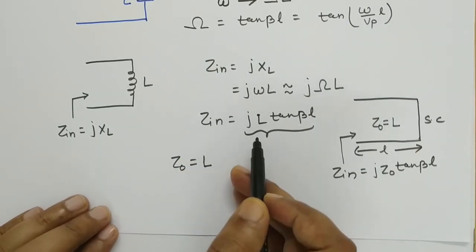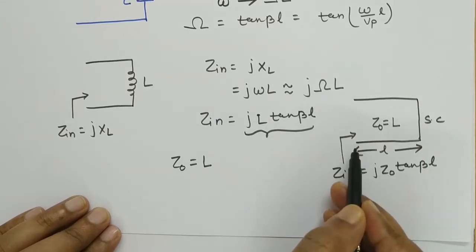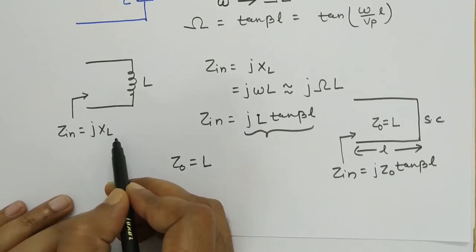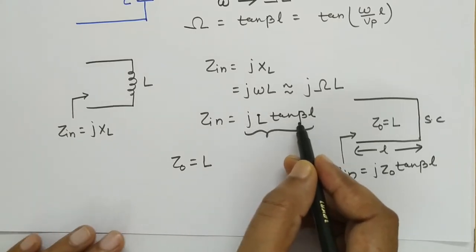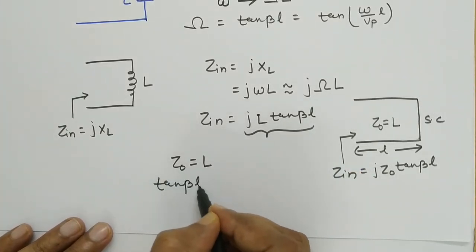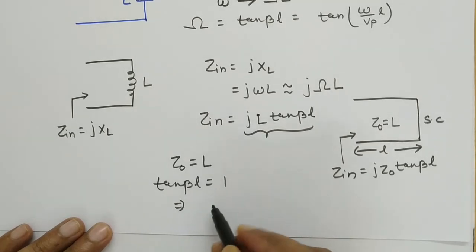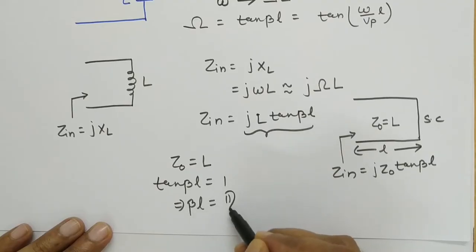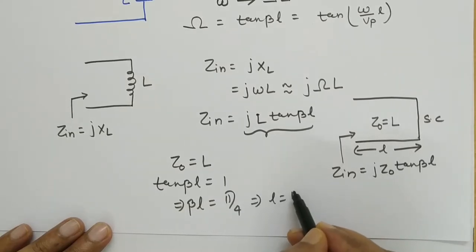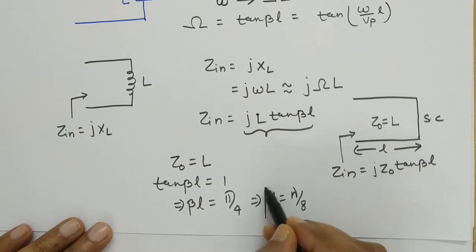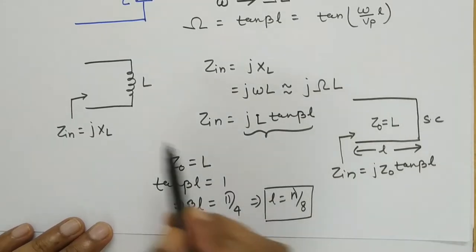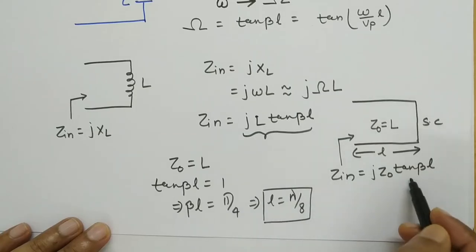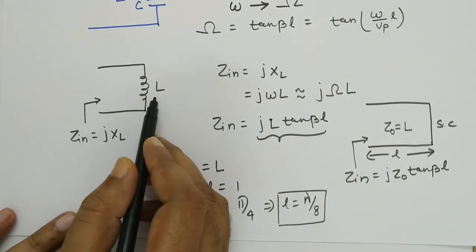To have the input impedance equal to j·X_L, that is j·ω·L, the tan(βL) value should be equal to 1. So we write tan(βL) = 1, which gives βL = π/4. Therefore L equals lambda by 8 (λ/8). This shows that if we take a λ/8 long transmission line and short-circuit it, we will get the same input impedance as an inductor.